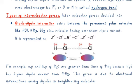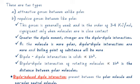Dipole-dipole interactions include attractive forces between unlike poles and repulsive forces between like poles. This force is generally weak, in the order of 3 to 4 kJ/mol, and significant only when molecules are in close contact. Greater the dipole moment, stronger the dipole-dipole interaction. As a molecule is more polar, dipole-dipole interactions increase and the boiling point of the substance will be higher. Dipole-dipole interaction in solids is inversely proportional to R³; for rotating molecules it is inversely proportional to R⁶, where R is the distance between polar molecules.